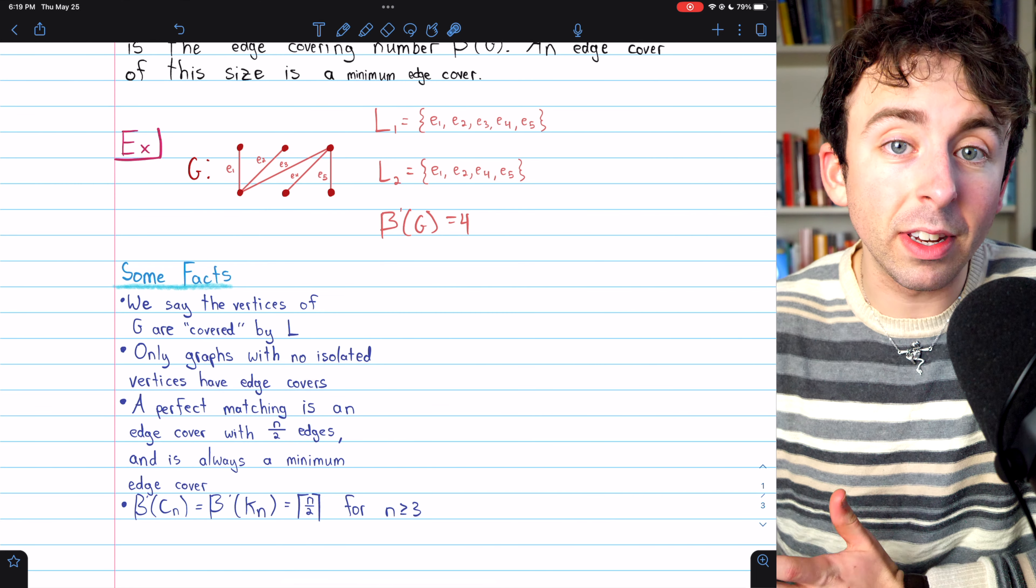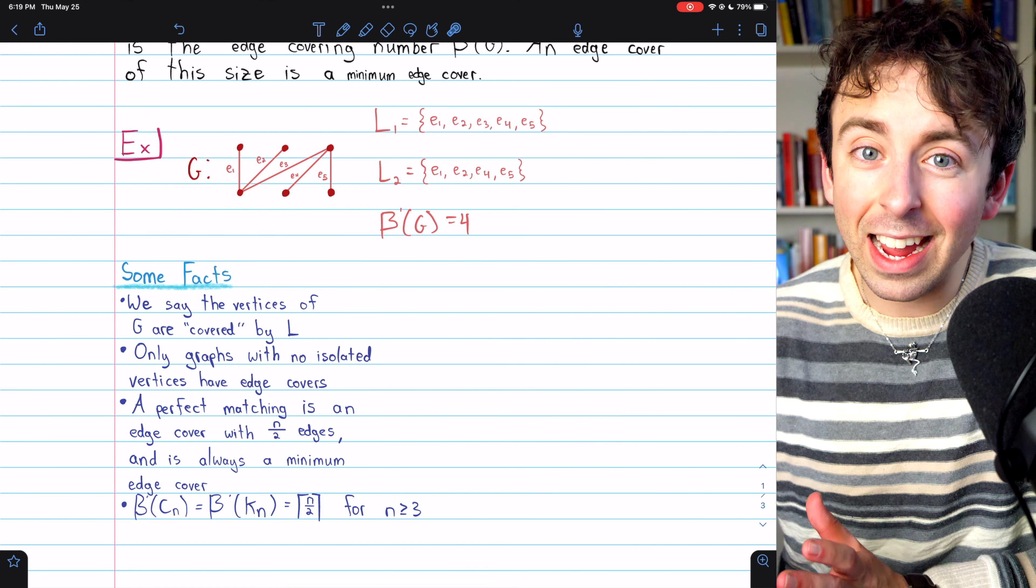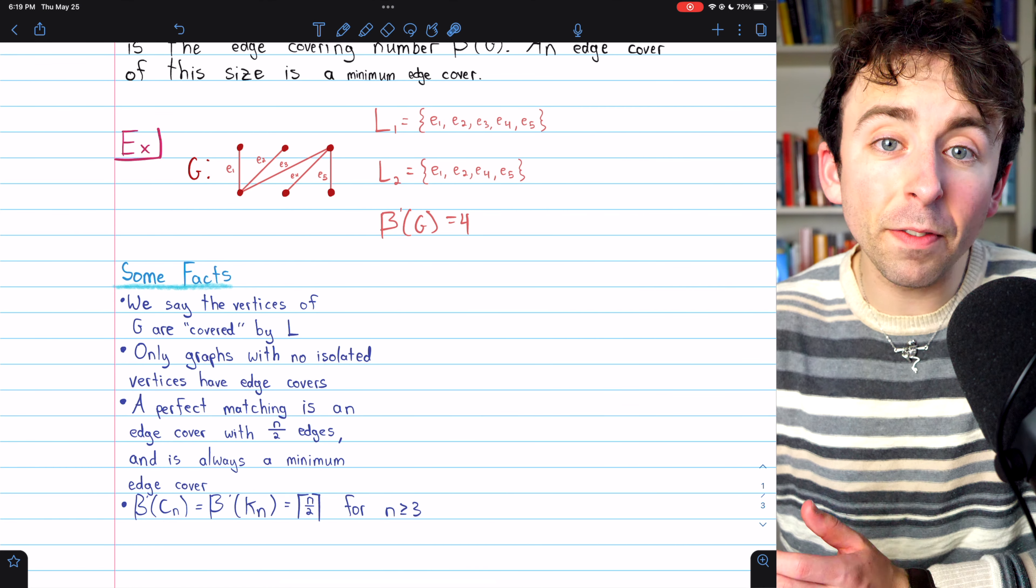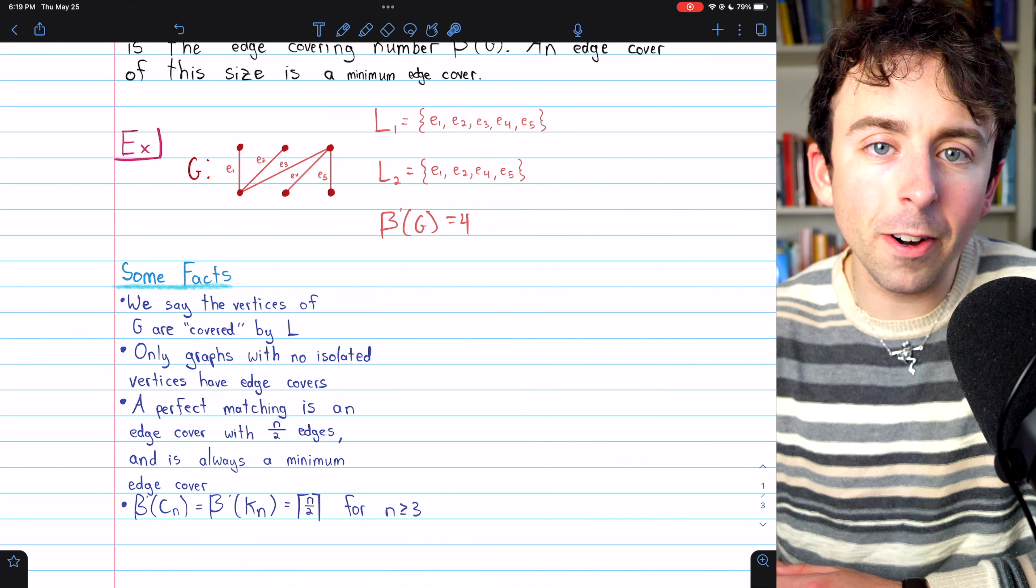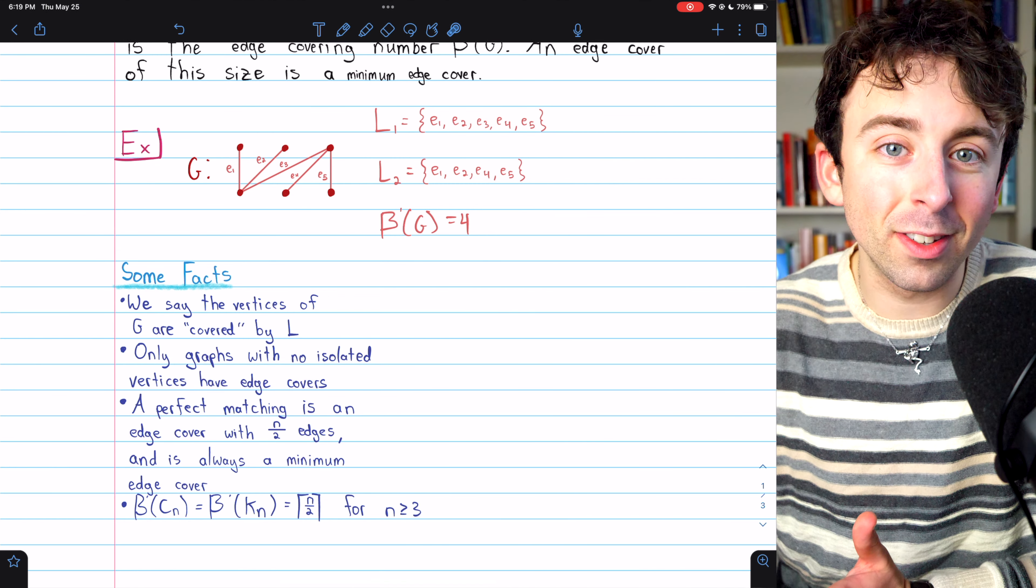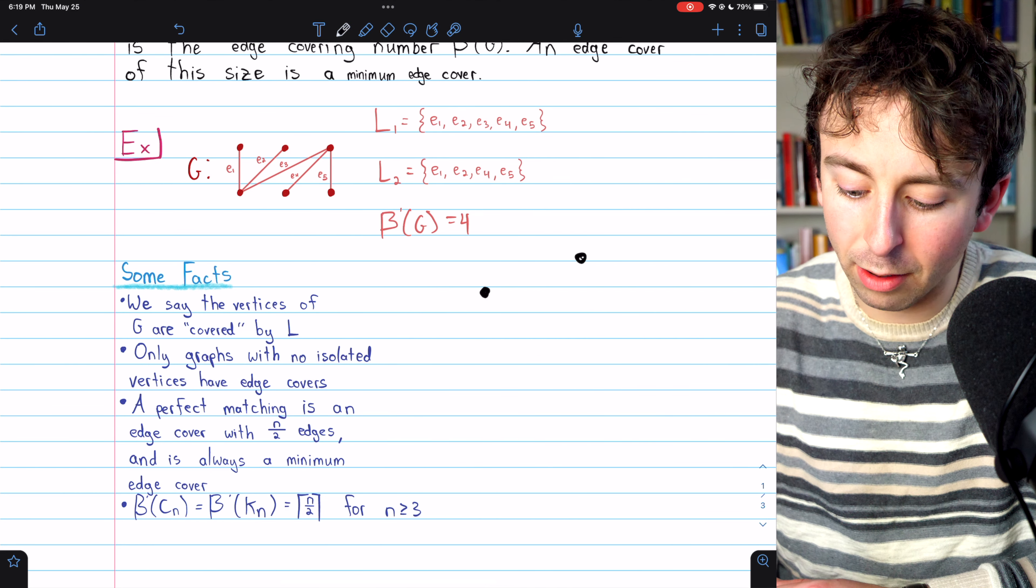So earlier I said, if you just take all edges of a graph, usually that will be an edge cover. The case where it wouldn't be is if the graph has isolated vertices. If a graph has isolated vertices, you could take all of its edges, you're still not going to be able to cover that isolated vertex.